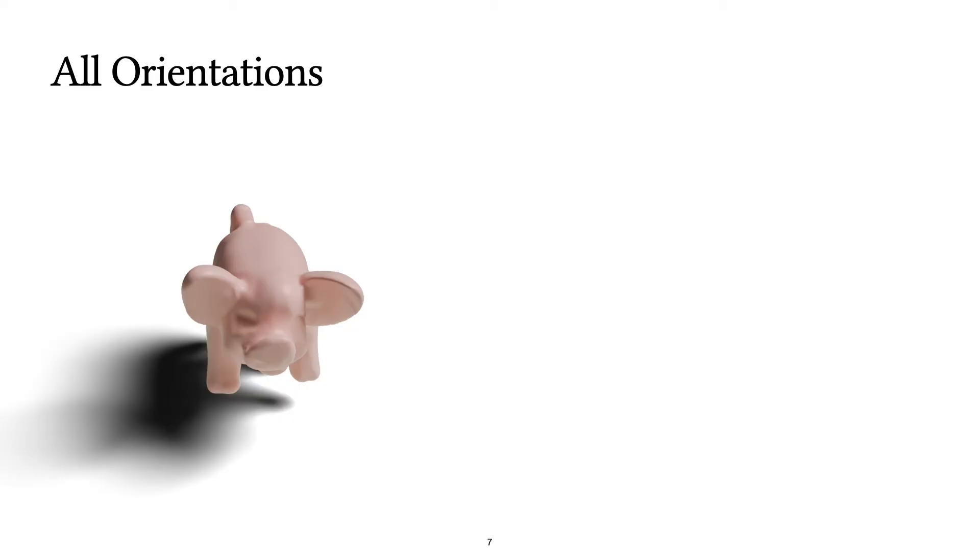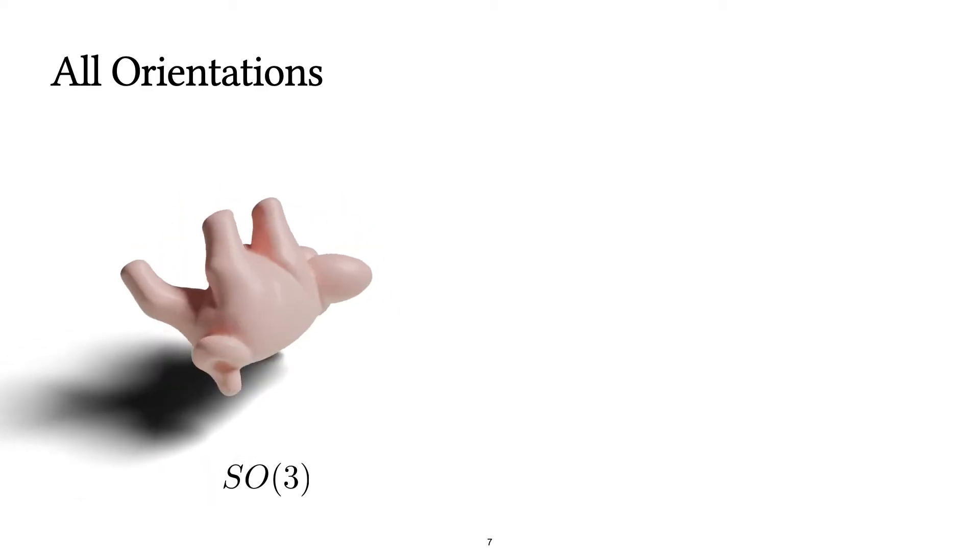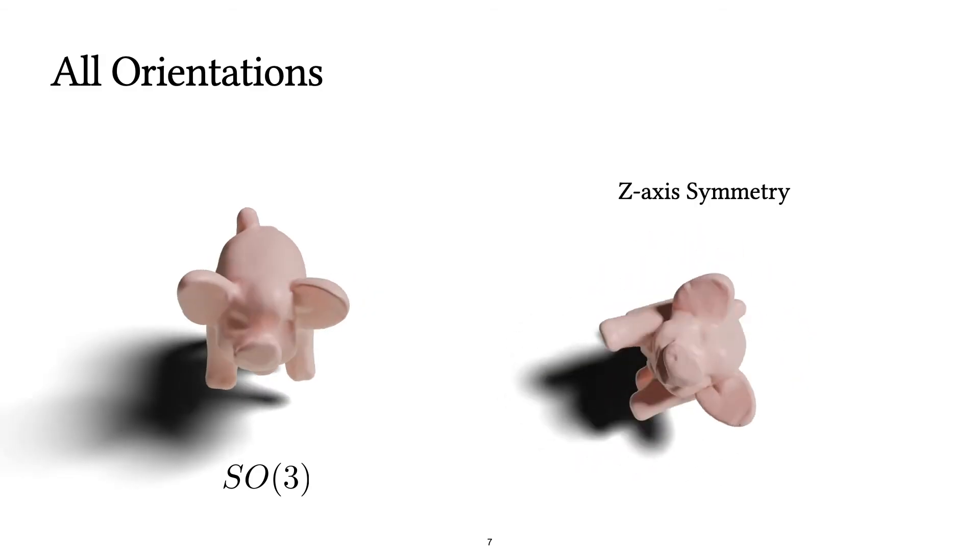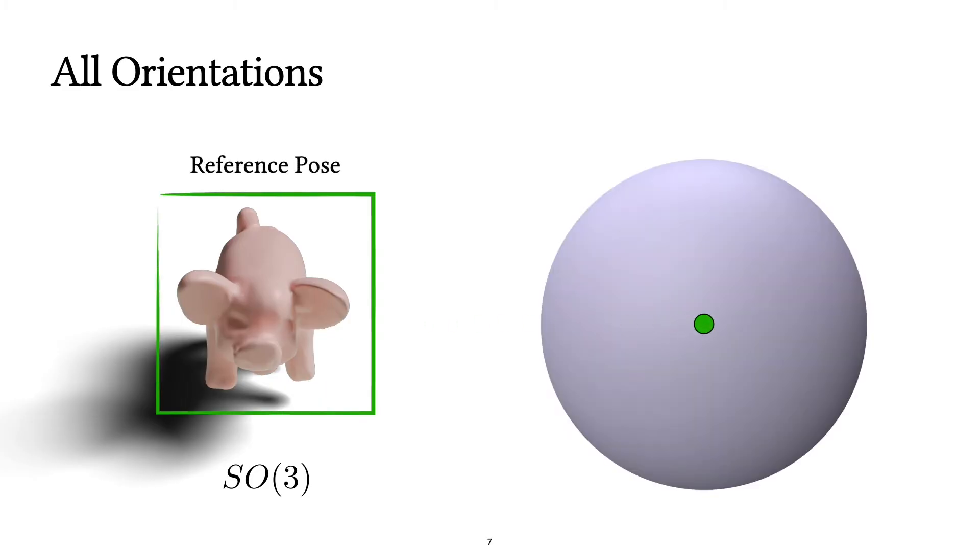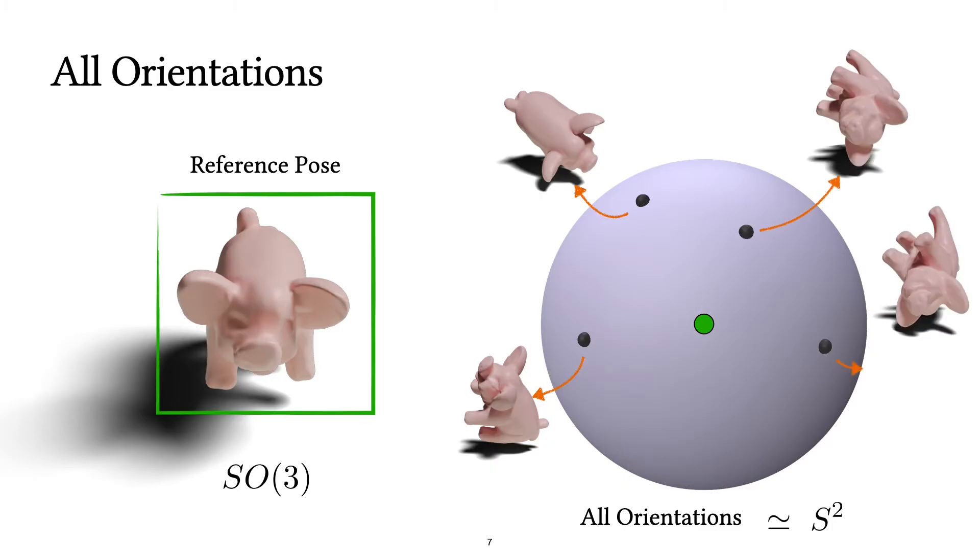Instead of sampling rotations from all of SO3, we observe that our problem setup is symmetric with respect to z-axis rotations. That means if we take a reference pose, then we can identify other orientations by a unit vector or a point on the unit sphere.